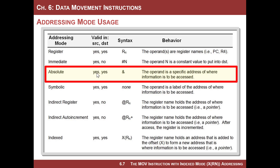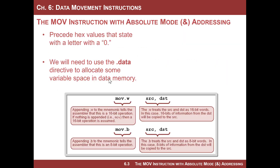Absolute addressing can be used in both the source and the destination. This allows us to move information from an address location into another address location, but you can also mix and match — move something from an address location into a register, or from a register into an address location. When we start working with memory, we need to start using the dot data directive, which allows us to set up variables in data memory.